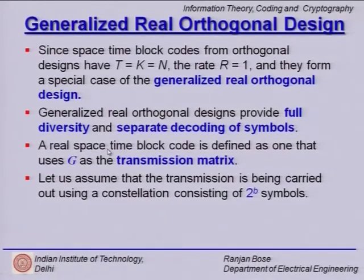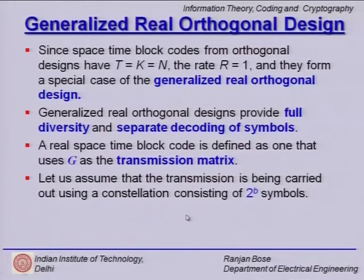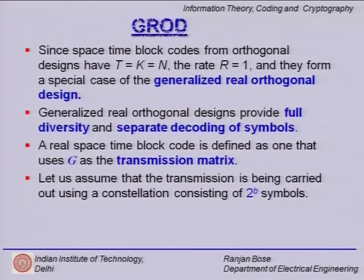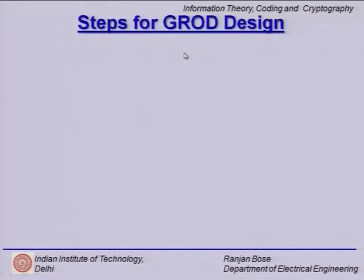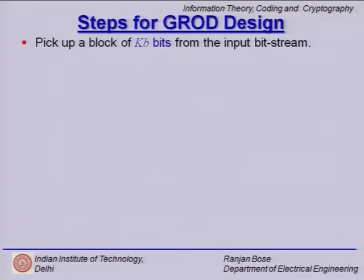A real space time block code is defined as one that uses G as a transmission matrix, where G_transpose·G should be a matrix with only diagonal elements as non-zero. Let us assume transmission is carried out using a constellation of 2^b symbols. For this generalized real orthogonal design — abbreviated GROD — the steps are: pick up a block of k·b bits from the input stream. Today we are generating enormous amounts of bits, so we take a block of k×b bits.